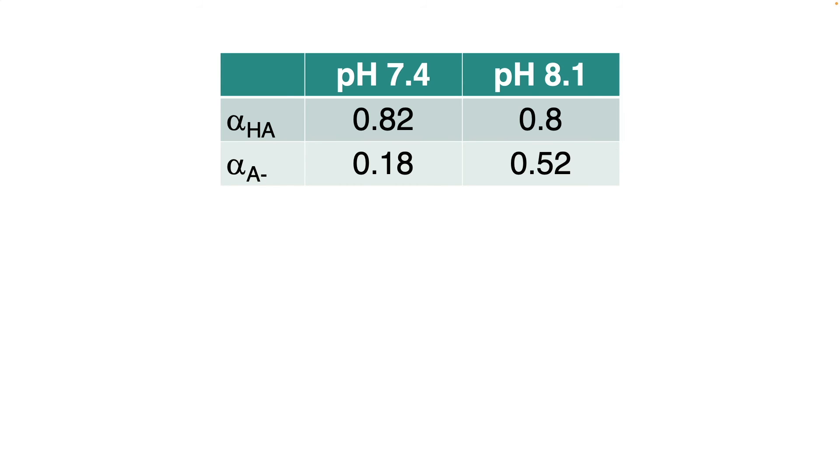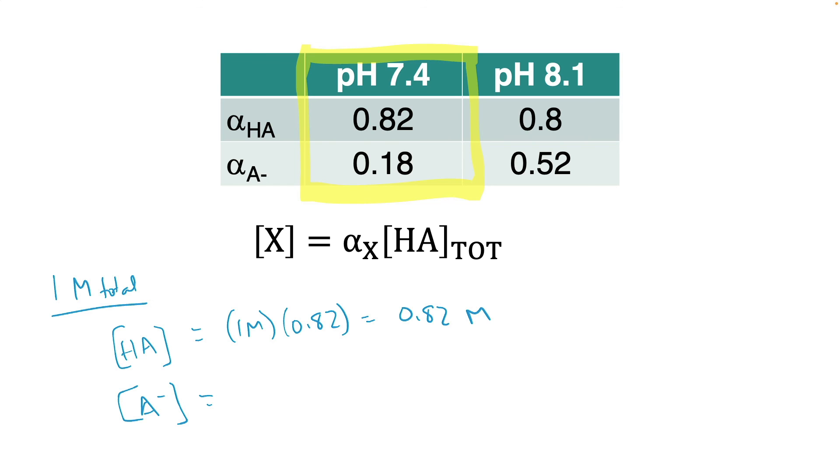So the last thing we have to address is how do these fractional compositions relate to concentration. It's pretty simple. The concentration of something is going to be its fractional composition times the total concentration of the acid. So for example, if we're talking about pH 7.4 and we had a one molar total solution, then the concentration of HA would be one molar times the 0.82 of the fractional composition. So we would have a 0.82 molar composition of HA. And then for A-, it would be 0.18 times one molar, so 0.18 molar. I just use one molar for ease of calculation. You could use anything. If it were 0.01 molar total, you'd have 0.082 molar HA and 0.018 molar A-, for example.